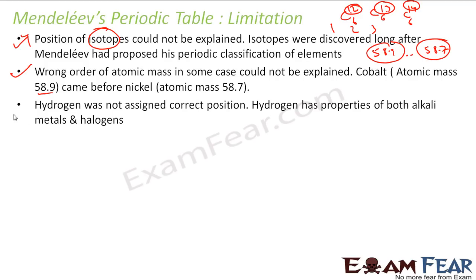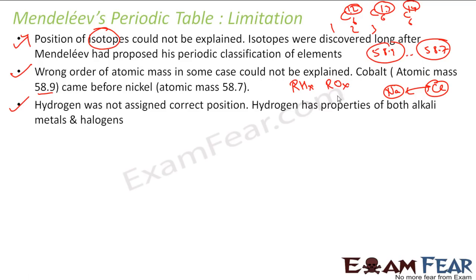Hydrogen was not assigned a correct position because hydrogen has properties of both alkali metals and halogens. Hydrogen behaves like chlorine in many cases and also behaves like sodium. Since his classification groups were based on the way elements react with hydrogen and oxygen, hydrogen itself behaved both as an alkali metal and a halogen, so its position in the table was not clear.